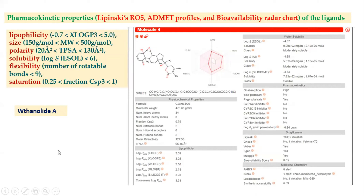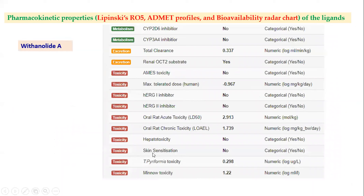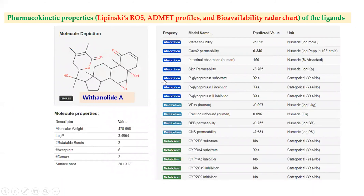All values of lipophilicity, size, polarity, solubility, flexibility, and saturation for Withanolide A lie within the pink region, giving it very good bioavailability. There was no toxicity, hepatotoxicity, or skin sensitization, and it was negative for Ames toxicity. Regarding Lipinski's Rule of Five: molecular weight is below 500 Da, log P is below 5, hydrogen bond acceptors are less than 10, and hydrogen bond donors are less than 5—all criteria are obeyed by Withanolide A, compared to the other two phytochemicals.